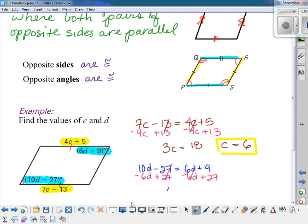And then I have 4d is equal to 36. So when you divide by 4, we find that d is equal to 9.